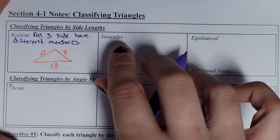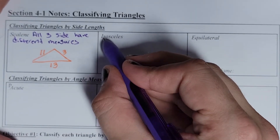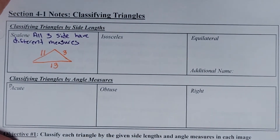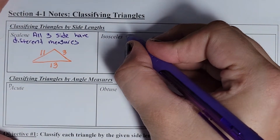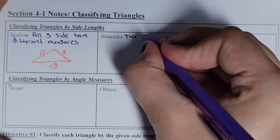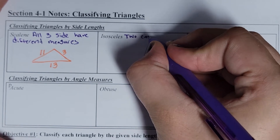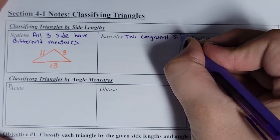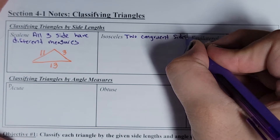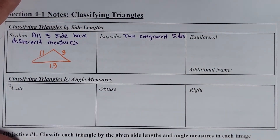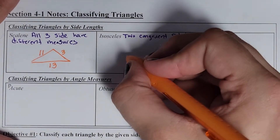Isosceles — this time we have two sides that are the same. I kind of remember this because there are two S's right in the word to help keep track of that. So we have two equal sides, or what we'll say in geometry is it has two congruent sides. Congruent is just our way of saying something has the same measure in math.